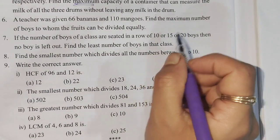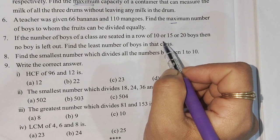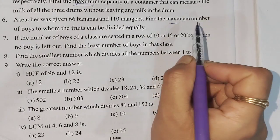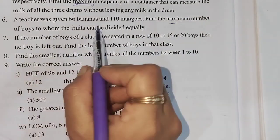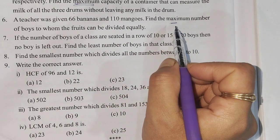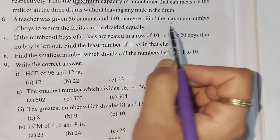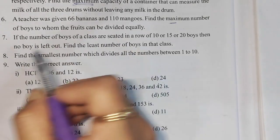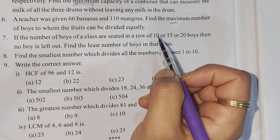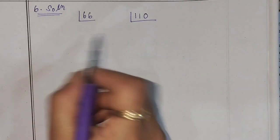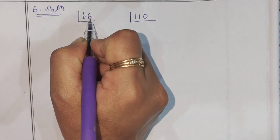This is the maximum number of boys to whom the fruits can be divided equally. How do you think? This is the answer to the question. The answer to the question is 22.